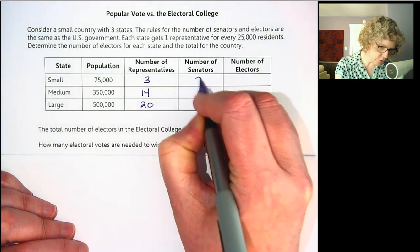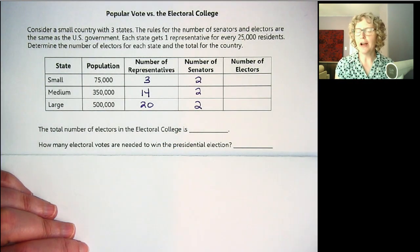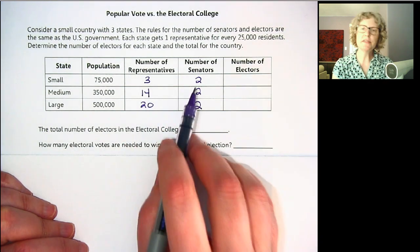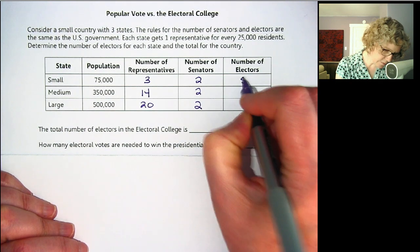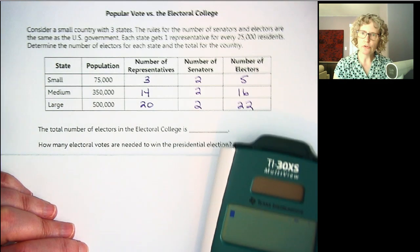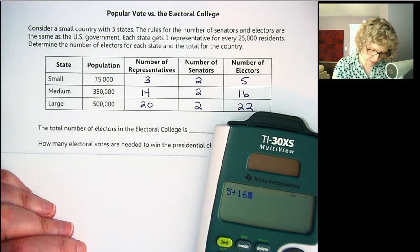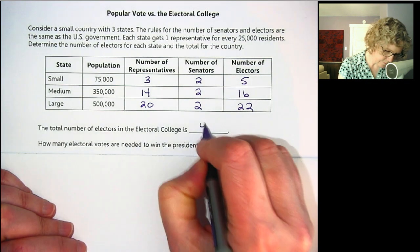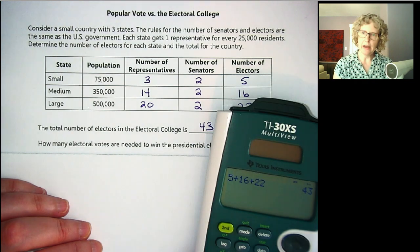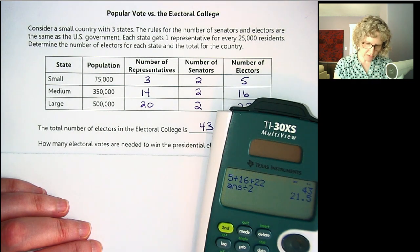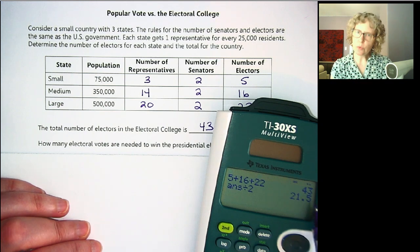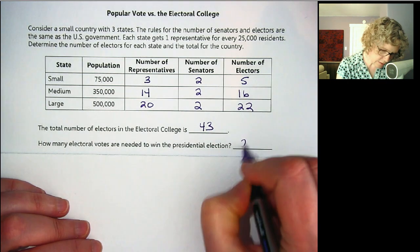The number of senators is two per state. If you're familiar with this, go ahead and try it yourself and skip ahead to check your answers. The number of electors is the number of representatives plus the number of senators for each state. Adding each row gives us 5, 16, and 22. The total for the country is 5 plus 16 plus 22, which equals 43. To win the presidential election, we cut that in half: 43 divided by 2 is 21.5, so we bump that up to 22 as the minimum needed for a majority.